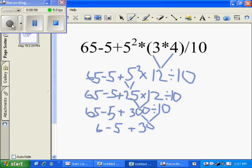Addition and subtraction is the same. Whatever comes first left to right in the problem, you do first. In our problem, 65 minus 5, which would equal 60, is first. Plus 30 would equal 90, which is our final answer for our problem.